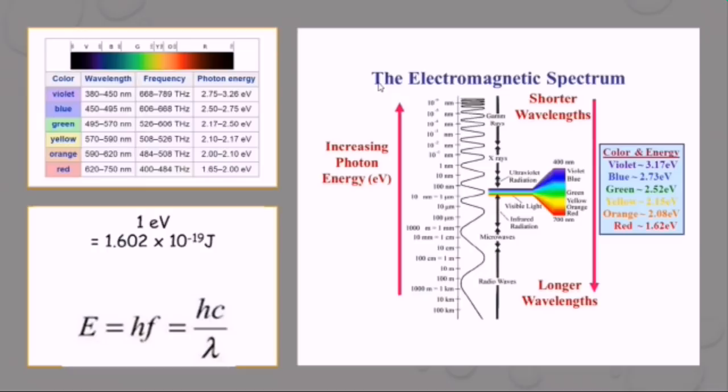Therefore, ultraviolet light is very dangerous. X-rays and gamma rays are even more dangerous as these are very high energy radiations due to their high frequencies as can be seen in this spectrum.